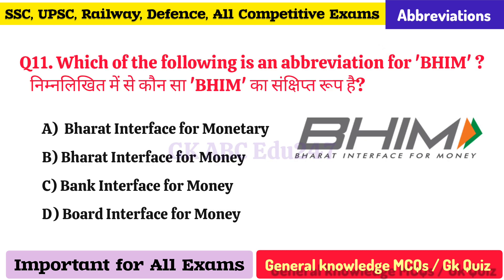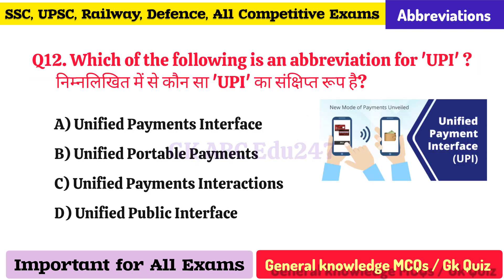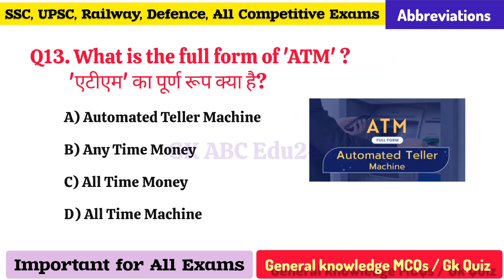Which of the following is an abbreviation for BHIM? BHIM stands for Bharat Interface for Money. Which of the following is an abbreviation for UPI? UPI stands for Unified Payments Interface.